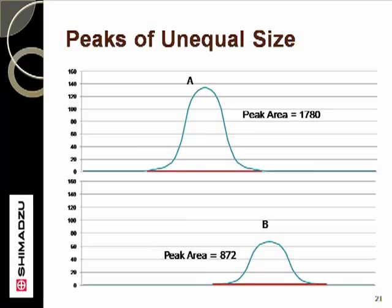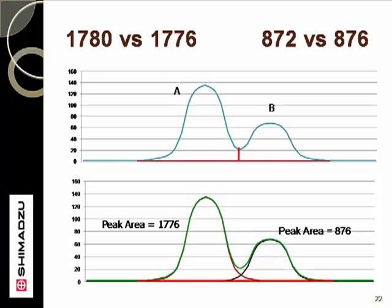Let's now look at a similar comparison, though with differently sized peaks. In this case, the A peak by itself would generate an area of 1780, and the B peak would generate an area of 872. When the peaks are nearly separated, there is a small shift in area toward the B component. This is caused by splitting the peak at the valley and having a larger trailing edge from the A peak contribute to the B peak area. While the shift is only small — only 4 area counts in this case — it would be worse if the smaller peak were smaller still.